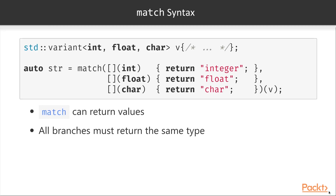Finally, match can also return values. This requires all the branches passed to the first invocation to have the same return type. As an example, imagine having a variant of int, float, and char, and we want to return the string that corresponds to the type stored inside the variant. We can invoke match where every branch of the first invocation returns a string, then pass the variant as the second invocation. What we'll get is a string returned from the correct branch, which can be stored in a variable such as str.